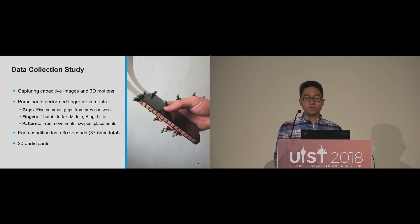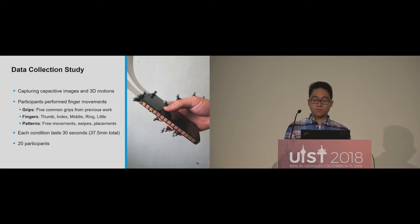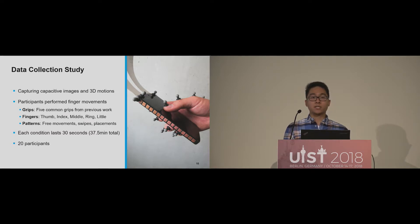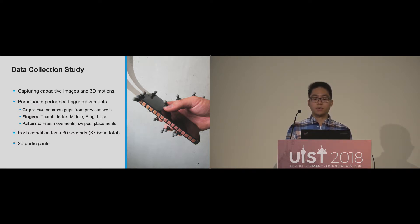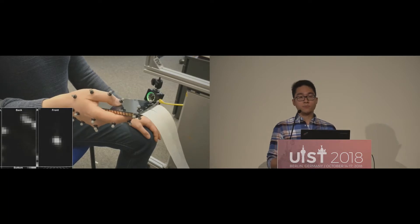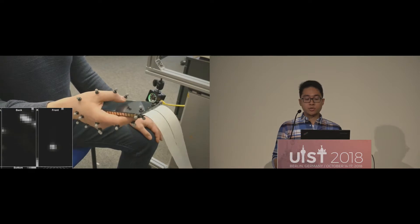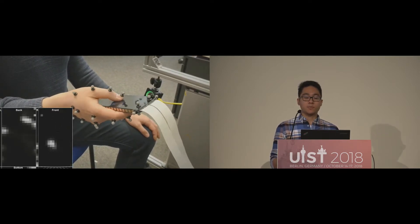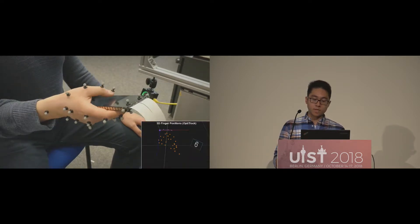We covered a wide range of finger positions by instructing participants to move their fingers based on three variables. Participants started by holding the device in one of five common grips from previous work. We then instructed them to move a specific finger in a given pattern, including free movements, swiping gestures, or placing their fingers at different locations and holding them for a short time. Each condition lasted 30 seconds so that each participant was recorded for about 40 minutes. In total, we recruited 20 participants. The visualization on the bottom left shows the resulting capacitive images from the finger movements on the device surface.